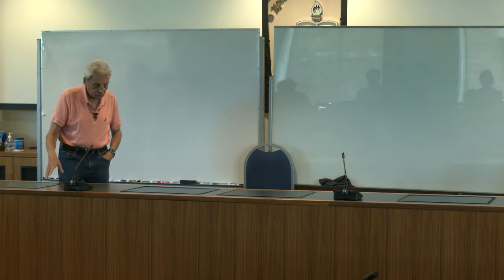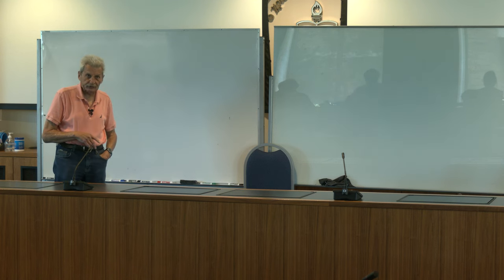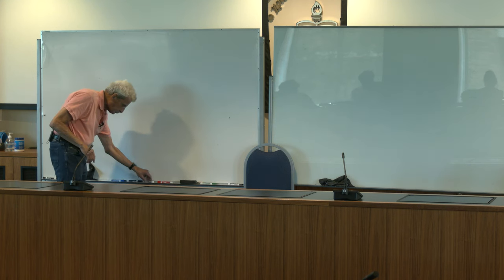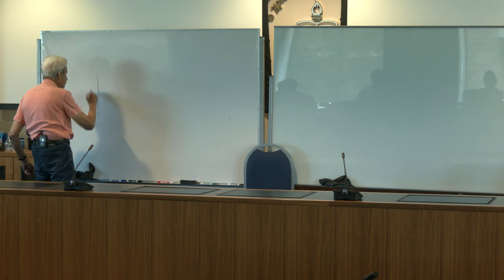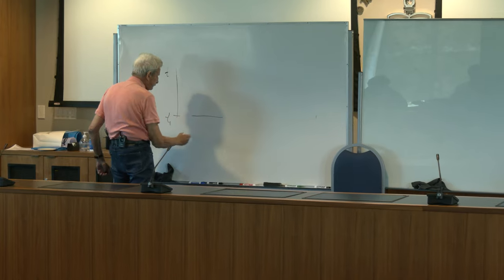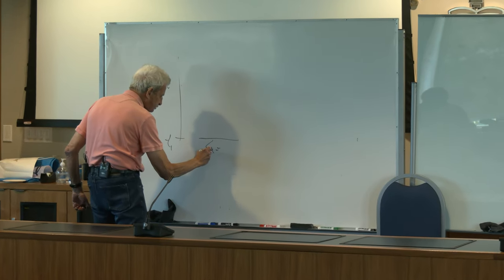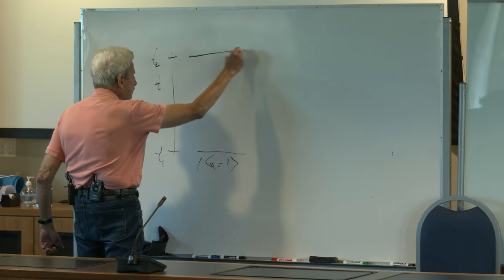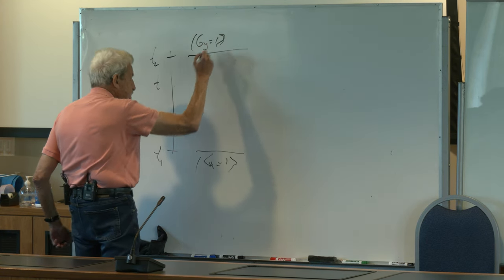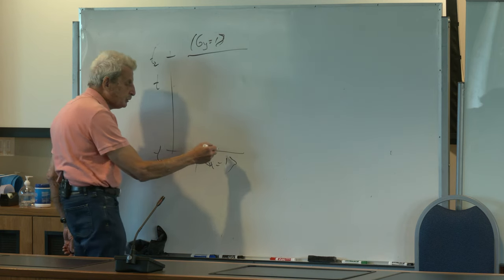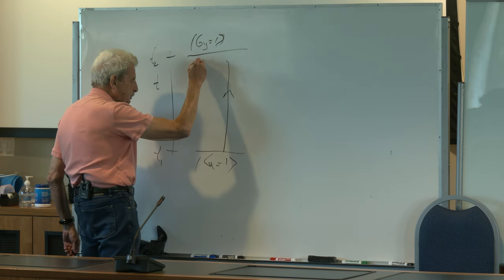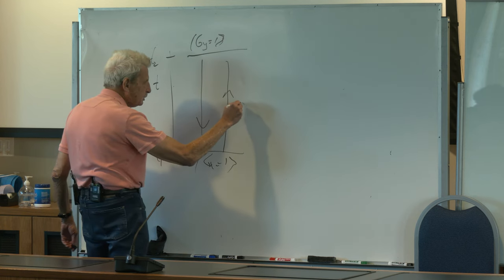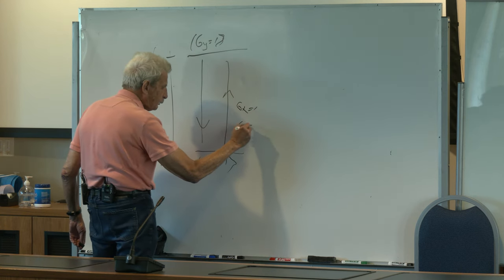In my last talk, I discussed the pre- and post-selected system of a spin-half. We say that if at time t1, the spin in the x-direction equals one, and if at time t2, the spin in the y-direction equals one, then in the time in between, the system is described by two vectors — one going forward in time and one going back in time — and we know both sigma-x equal to one and sigma-y equal to one.